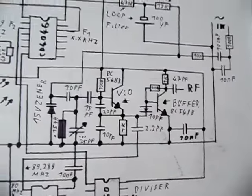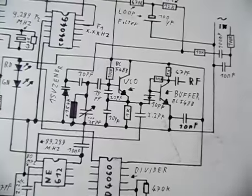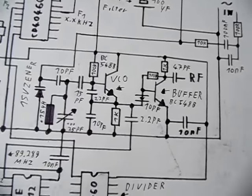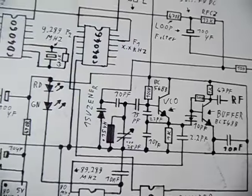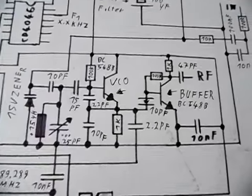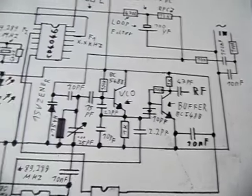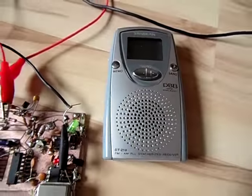Then you need a buffer amp. The buffer amp ensures that if you connect a load to the output of the transmitter that the VCO won't get affected that much.